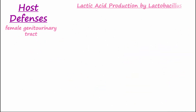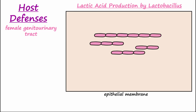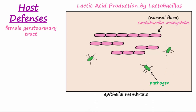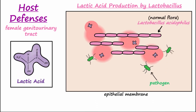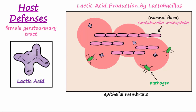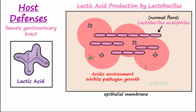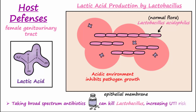The female genitourinary tract houses normal flora important for suppressing growth of potential pathogens. Most notably, the normal flora Lactobacillus acidophilus utilizes sugars found in the mucin layer for its own metabolism. In doing so, it generates lactic acid, which lowers urinary pH. This acidic environment doesn't affect the lactobacillus, but it does inhibit the growth of potential pathogens. Taking broad-spectrum antibiotics can kill off the beneficial lactobacillus, increasing the risk for getting a UTI.